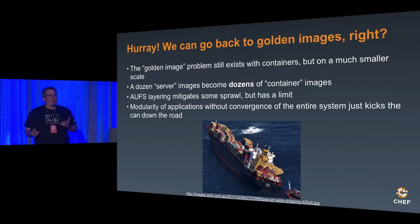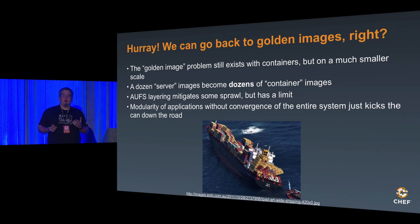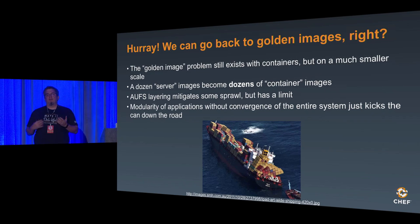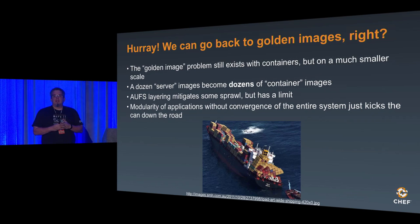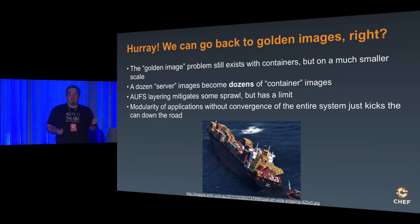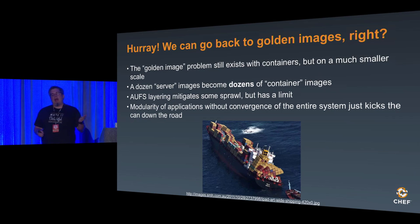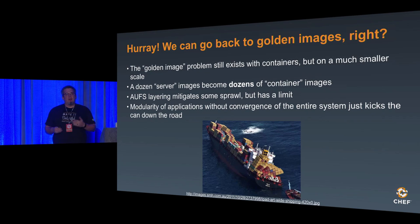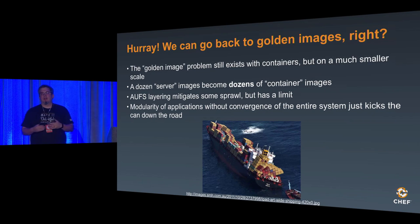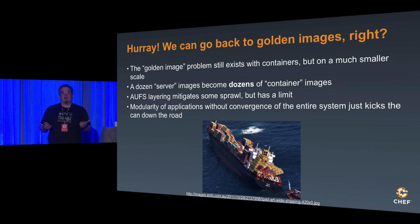One good thing Docker introduced — and probably why it spread like wildfire — is the idea of layered file systems. Now you can treat your file system kind of like a git commit history: you make a change, it creates a new entry point, you can roll back, you can roll forward. It mitigates some of the problem, but you end up with a limit: you can only go up to a certain number of layers before you have to create a new image and start over.